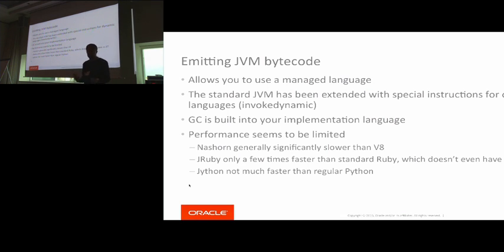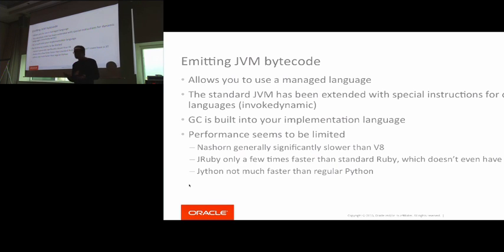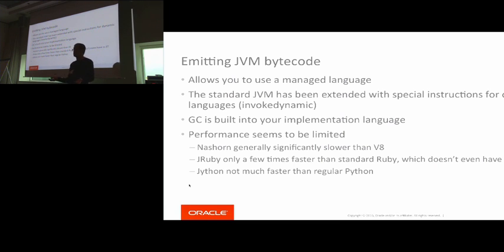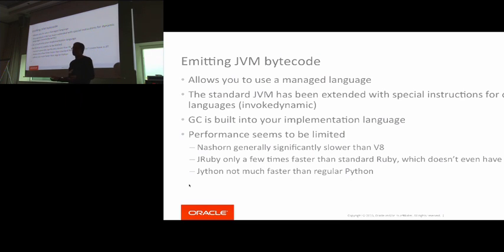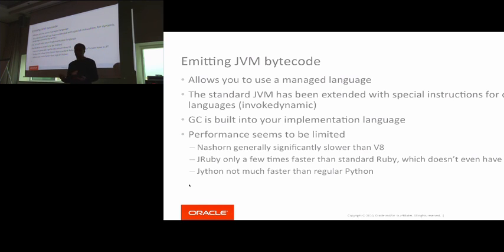Projects exist that use this technology, but they don't perform all that great. For example, NASHORN is a JavaScript implementation that runs on top of the JVM. It's convenient to use because you can interface with Java libraries, but compared with performance of the V8 engine from Google, it's not that great. JRuby, on the other hand, is faster than the original Ruby implementation, but that's because the original Ruby implementation doesn't even have a JIT — it's only a couple of times faster, when technically you should be able to go 10 to 15 times faster than an interpreted version.